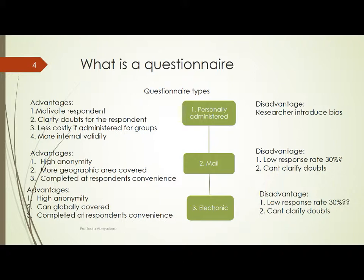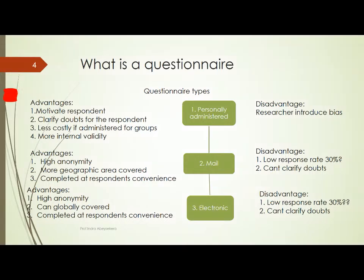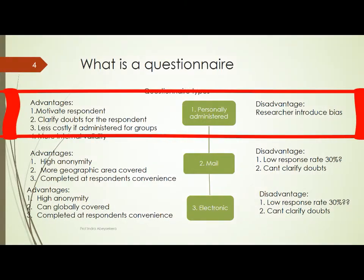When a questionnaire is personally administered, the researcher can motivate the respondent and clarify any doubt. If it is administered to a group of respondents, it becomes less costly, and there is more internal validity because the researcher knows it is the respondents who responded. But because of the researcher's presence, there is a disadvantage — the researcher can introduce bias.